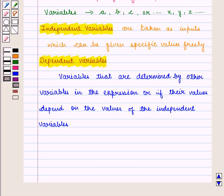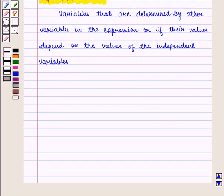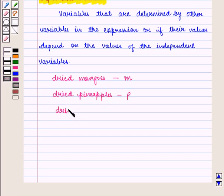In any real world problem, if we represent quantities as variables, we can describe a relationship between the quantities and the values by forming an equation. Now, in the previous example, suppose the amount of dried mangoes be M, the amount of dried pineapples BP, and the amount of dried apples is A.